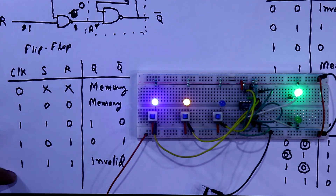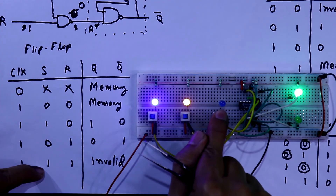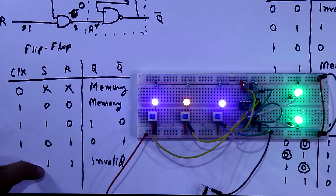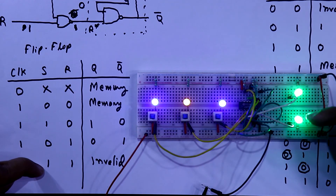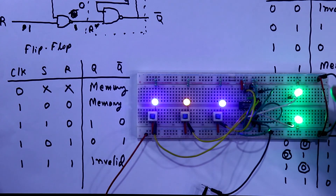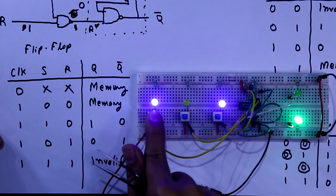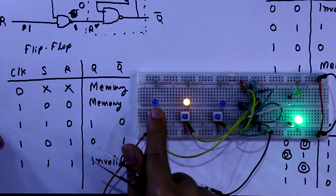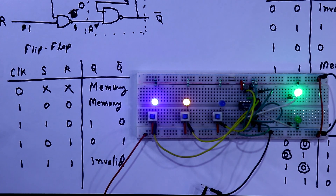Now we'll see the fourth case: clock one, S one, and R one. This is impossible because Q and Q-bar must be opposite to each other, so it is impossible or invalid. Sometimes both LEDs turn off and sometimes both LEDs turn on. This is how we have verified the truth table of the SR flip-flop. Thanks for watching.